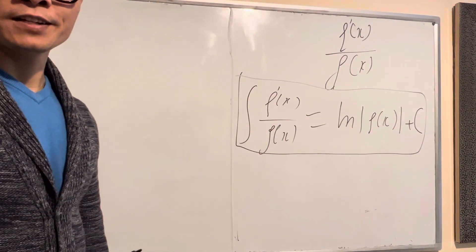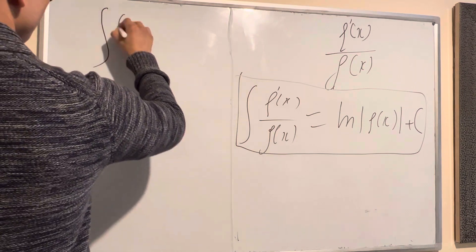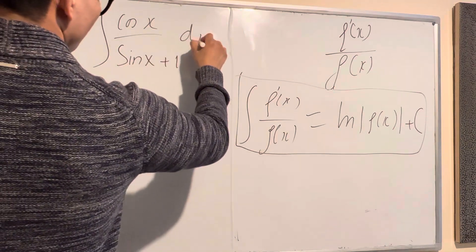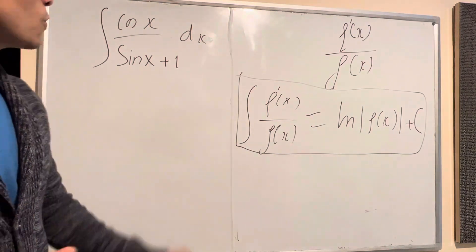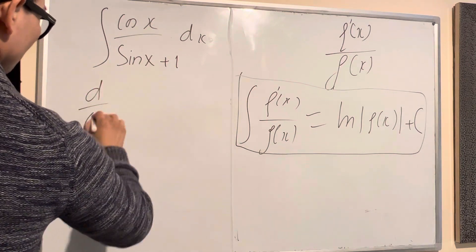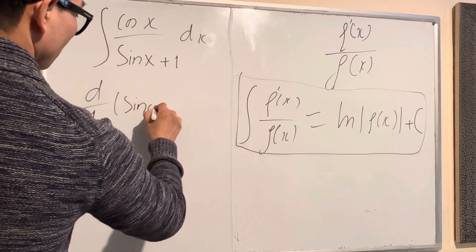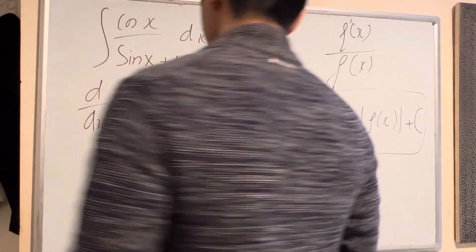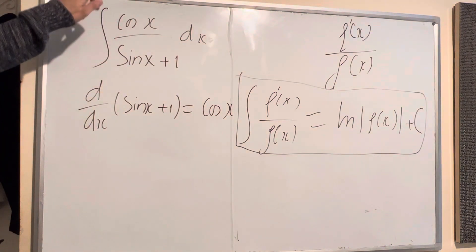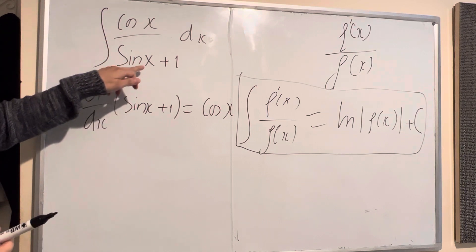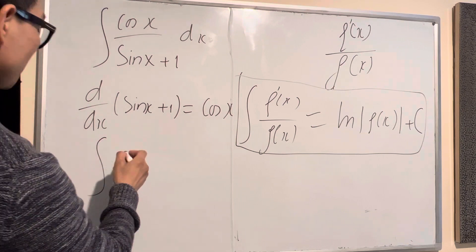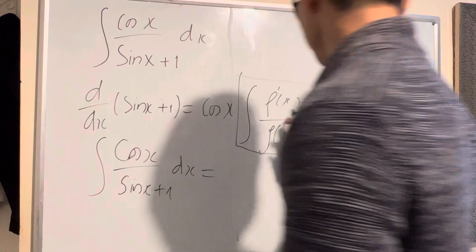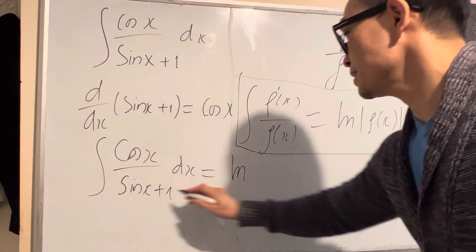Now I give you an example so you understand clearly. Integration of cos(x) over sin(x). Now you do the differentiation of the denominator — the derivative of sin(x) equals cos(x). You can see cos(x) equals the derivative of sin(x), meaning the numerator is the derivative of the denominator. So you can use this formula, and that will give you the answer: ln(sin(x)).